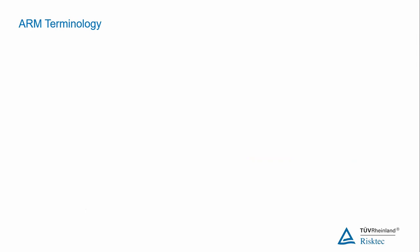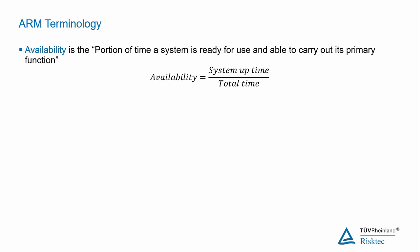Before we move on to discuss application of ARM further, it's worth taking a few moments to define the terms Availability, Reliability and Maintainability. Availability is defined as the portion of time that a system is ready for use and able to carry out its primary function.